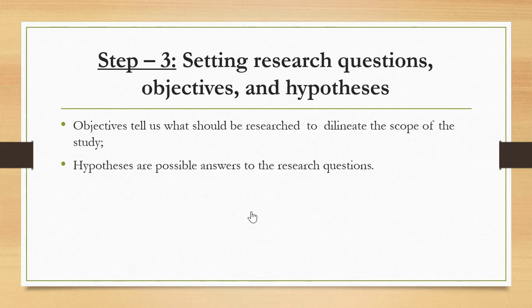The third step is setting research questions and objectives, and hypotheses. Sometimes we include just questions without hypotheses, and sometimes we include them both. Objectives tell us what should be researched to delineate the scope of the study and to have a framework. Hypotheses are possible answers to the research questions. Hypotheses may turn into theories if there is enough evidence to support them.